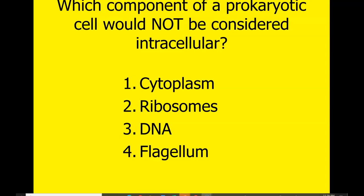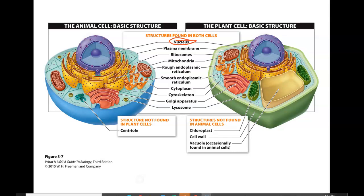Eukaryotic cells can be grouped into plant or animal cells. Both share: a nucleus containing chromosomes, a nucleolus responsible for making ribosomes that are sent out through nuclear pores, a plasma membrane, ribosomes, mitochondria, rough endoplasmic reticulum, smooth endoplasmic reticulum, cytoplasm, cytoskeleton, Golgi apparatus, and lysosomes. One structure found only in animal cells is the centriole, responsible for helping the cell divide during mitosis and meiosis.